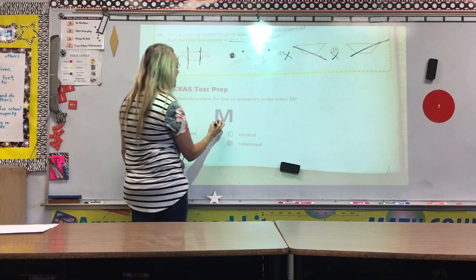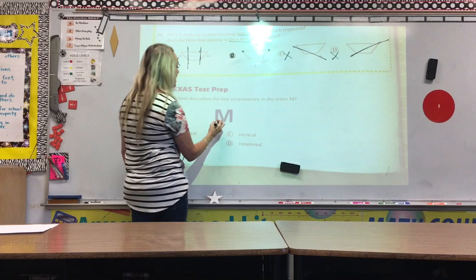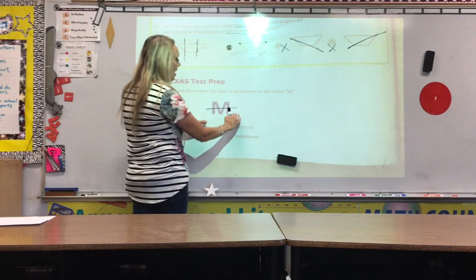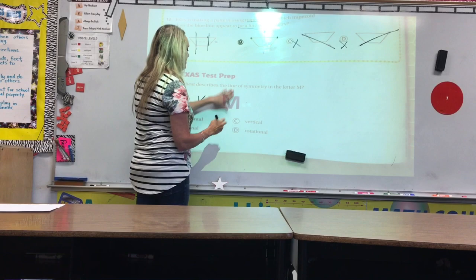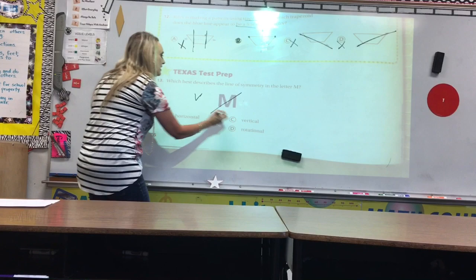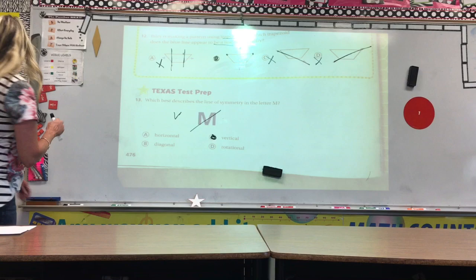Number 13, which best describes the line of symmetry for an M. So, I want you to take your pen or marker, whatever you have, and I want you to practice lines of symmetry. I cannot fold the M in half horizontally. So, then I'll try vertically. I can fold it vertically. Let's see about diagonally. No, that's not going to work. So, definitely C, vertical, is going to be the choice that you would pick.